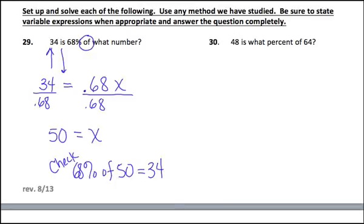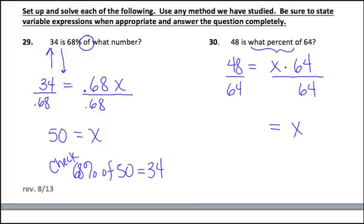Again, 48 is—that's what's all alone. It says what, you know, what. That's your x. And then 'of' means to multiply, so times 64. And so we divide both sides by 64 to get x alone, and we find out that 48 divided by 64 is 0.75, which represents 75%. Again, 48 is 75% of 64. Yeah, that seems to check.